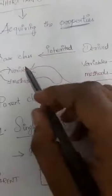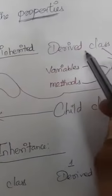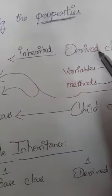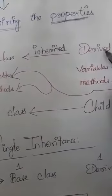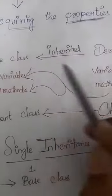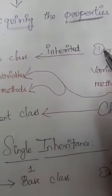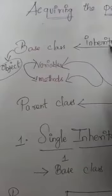I have represented this diagrammatically. This is the base class and this is the derived class. The derived class is going to acquire the properties of base class — that means derived classes are inherited from the base class.